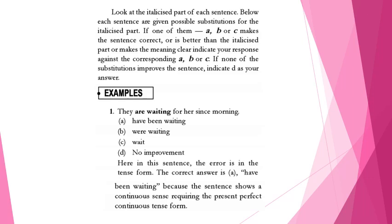First example: 'They are waiting for her since morning' — 'are waiting' is in bold. Options are: have been waiting / were waiting / wait / no improvement. The error is in the tense form; the correct answer is 'have been waiting.' When 'since' is given, showing the period of time, you have to use the perfect tense — specifically, present perfect continuous tense.